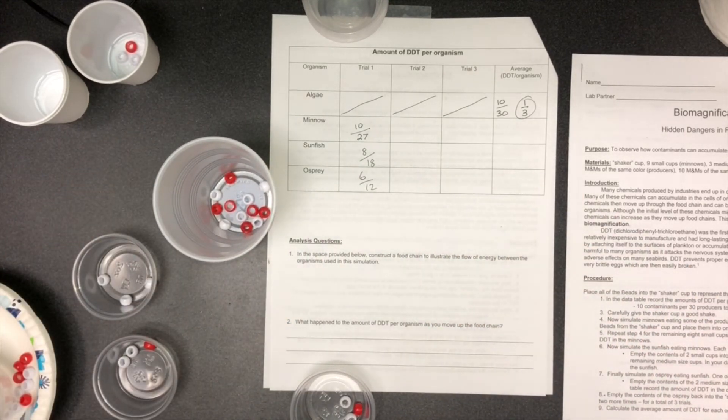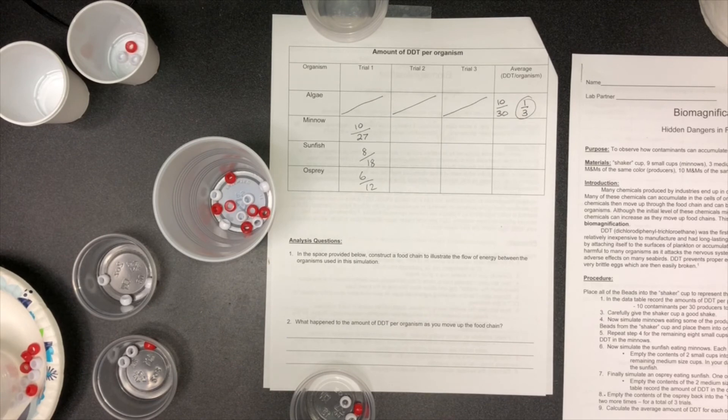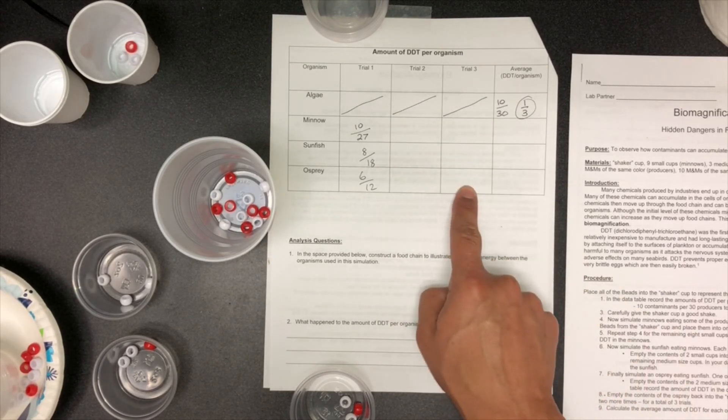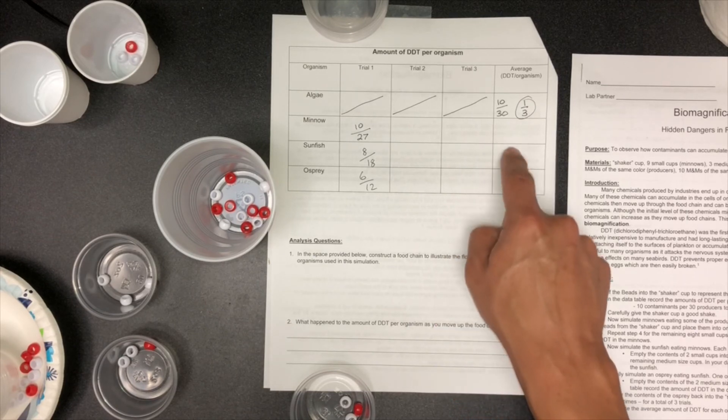And empty the contents of the osprey back into the shaker cup and repeat steps three through seven two more times to get a total of three trials. Calculate the average amount of DDT for each organism.